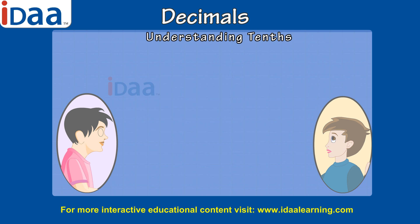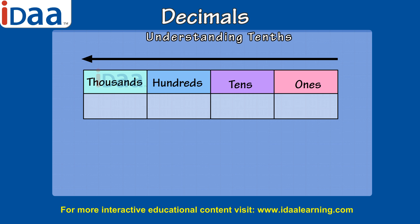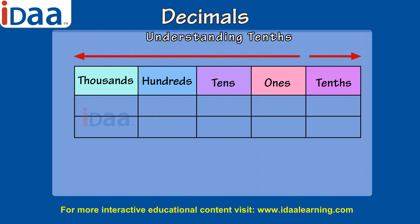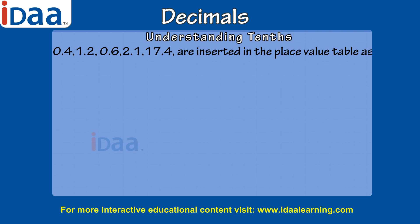You must also learn how to write a decimal in the place value table. You are already familiar with the place value table. It was formed by creating columns of 1s, then 10s, then 100s, then 1000s — moving to the left from the 1s column. For writing decimals in the place value table, we extend the table to the right by one column, titled as tenths. Decimals like 0.4, 1.2, 0.6, 2.1, and 17.4 are then inserted into this place value table.